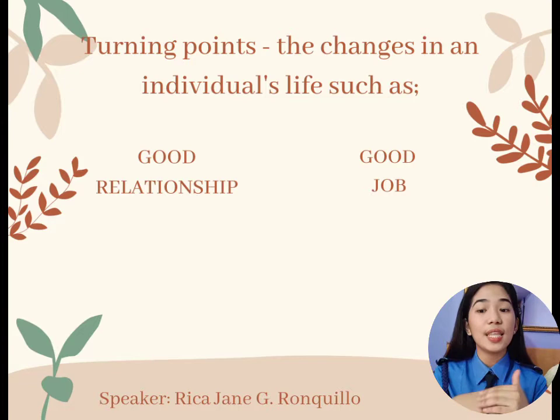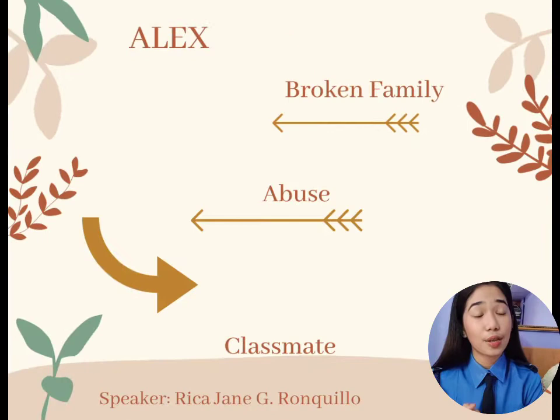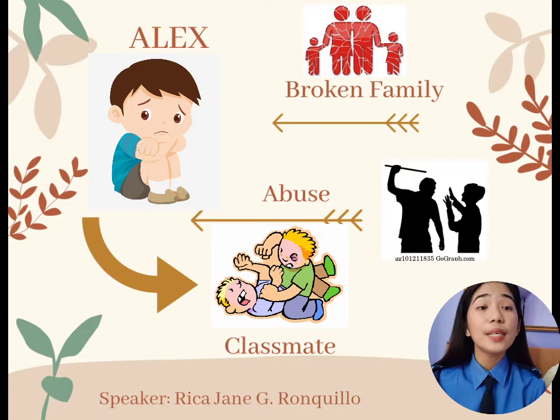For example, Alex comes from a broken family wherein he experienced abuse from his father, which he already did to his classmates. When he became an adult, he married someone who was capable of handling things and they built a strong relationship. The marriage that he has is considered a turning point which decreases his criminal behavior.